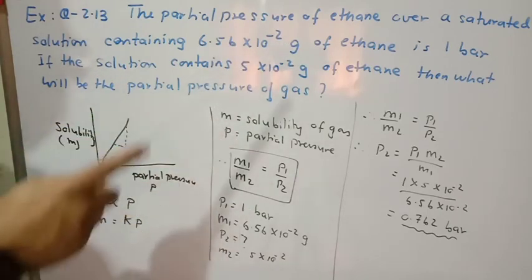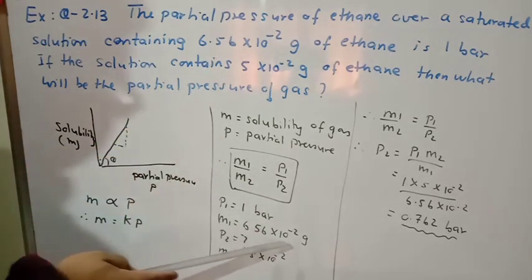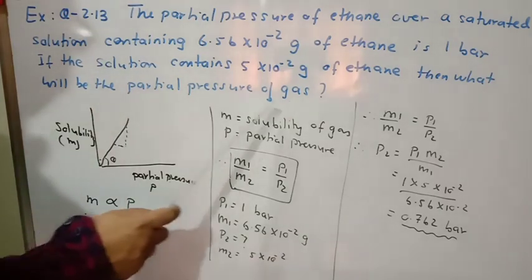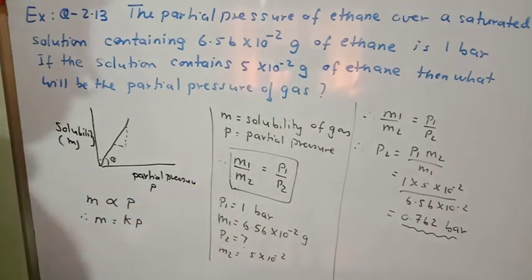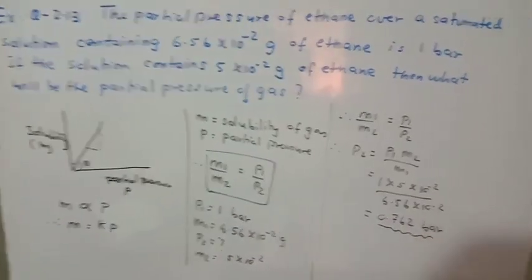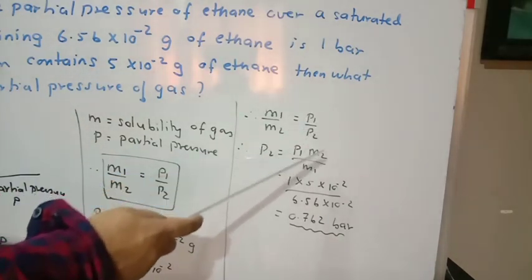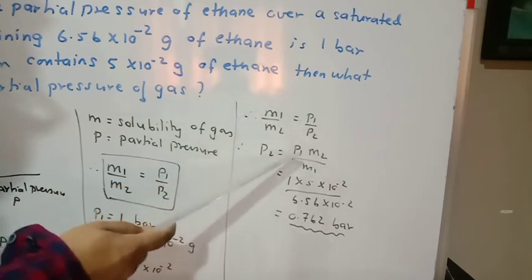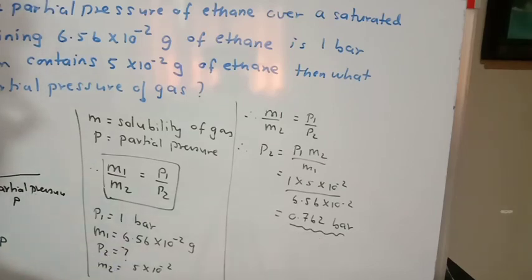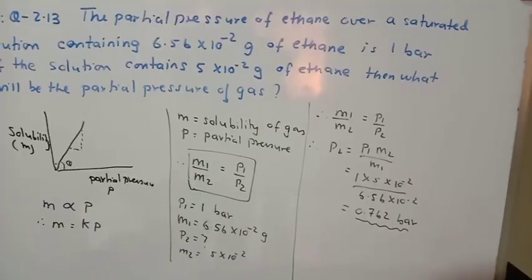Using the ratio m1/m2 = P1/P2, our question asks: if m2 is the new solubility, what is P2? Rearranging: P2 = P1 × (m2/m1). Substituting values, we get P2 = 0.762 bar. So this is the solution of the question.